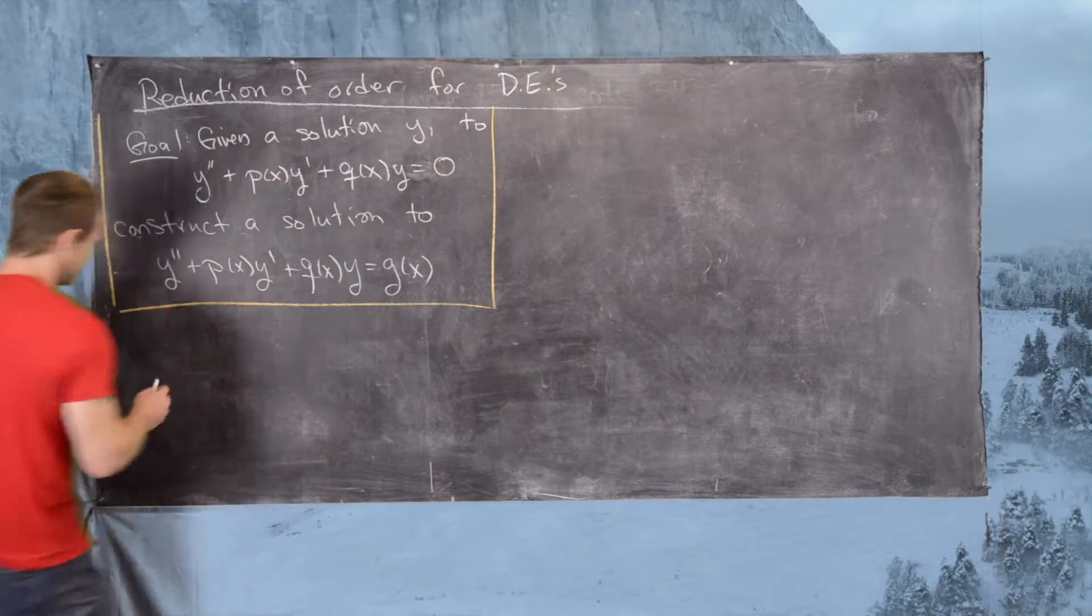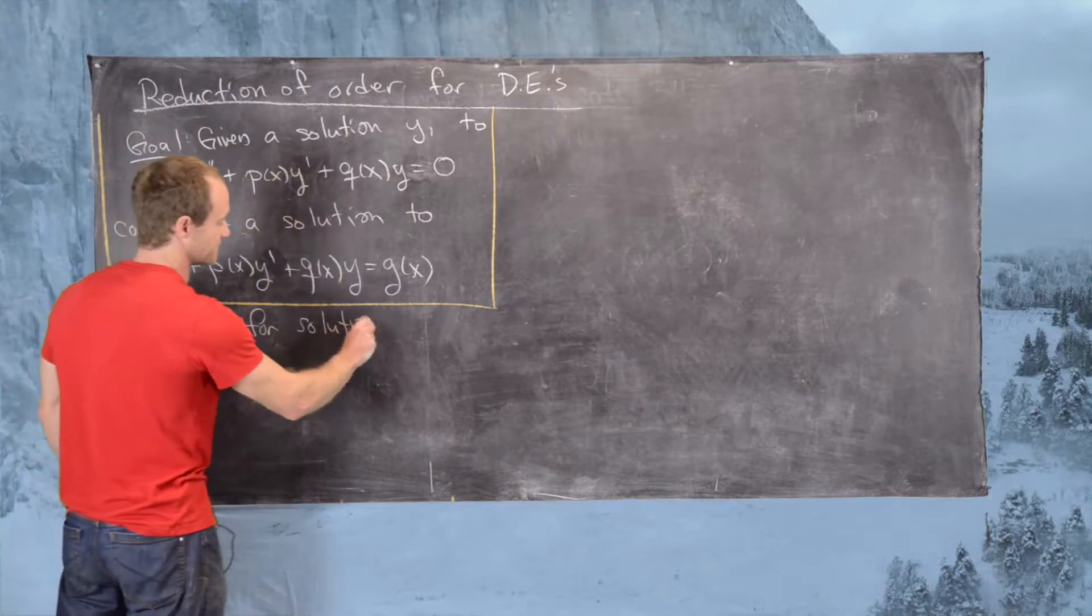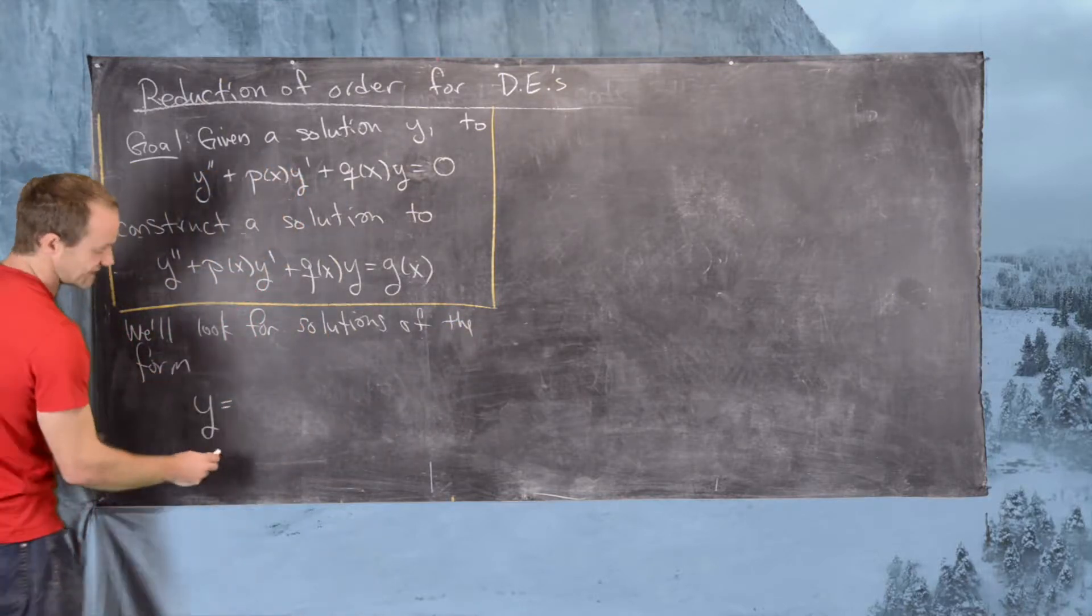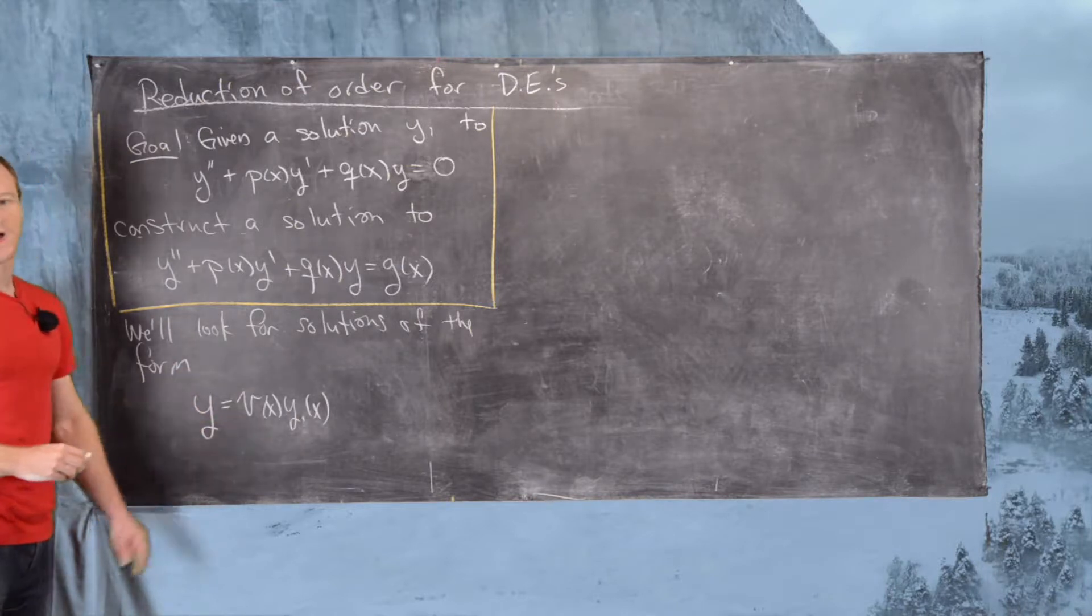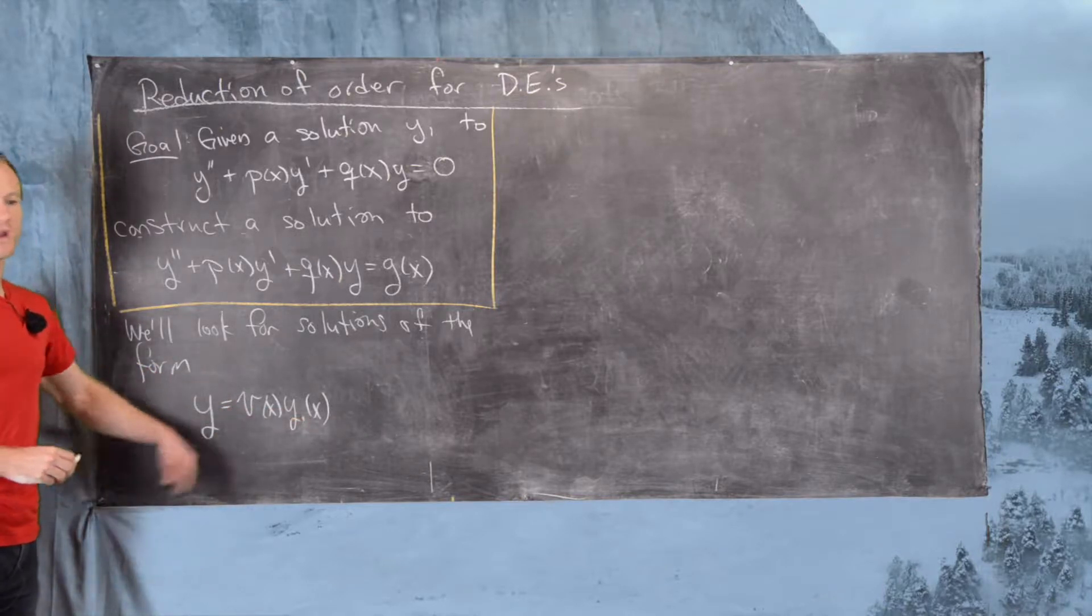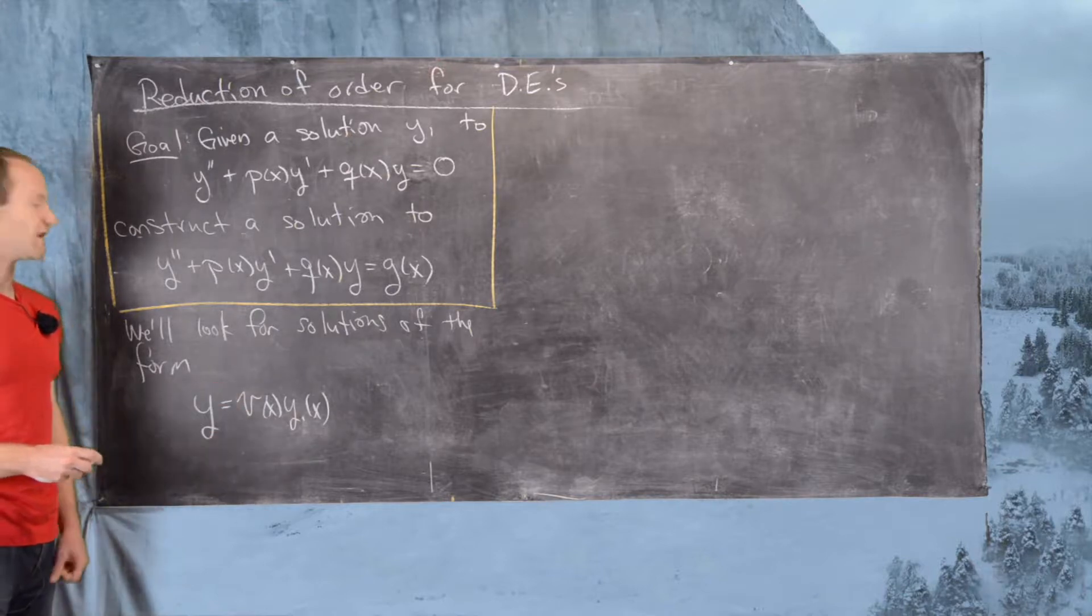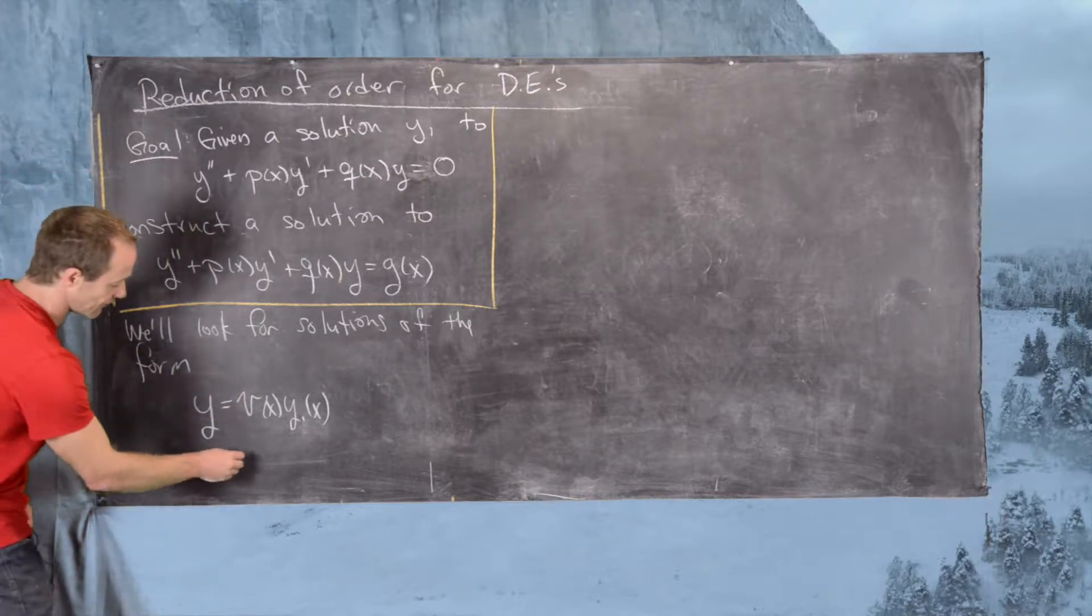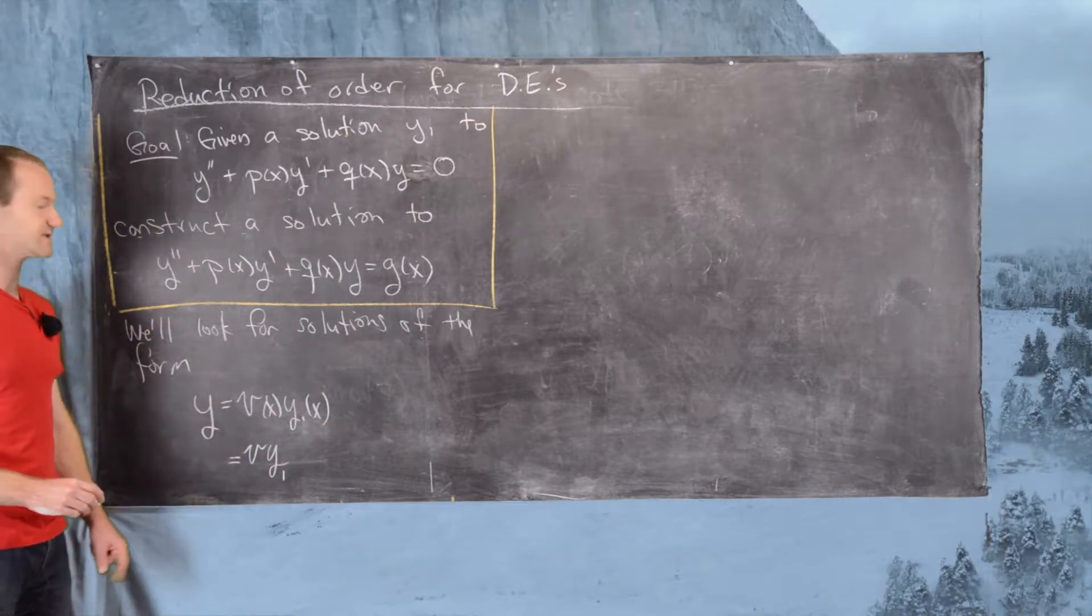We'll look for solutions of the form y = v(x)y1(x). This should be no surprise. There's a lot of techniques where we start with a solution to a homogeneous differential equation, multiply it by something else, and then end up with a solution to some associated differential equation. The method of variation of parameters uses a strategy that's pretty similar to this. I'll generally write this as v times y1, leaving off the dependence on x, although it will be there.